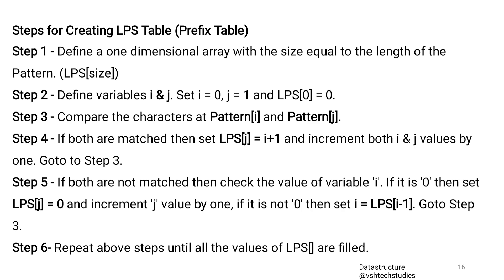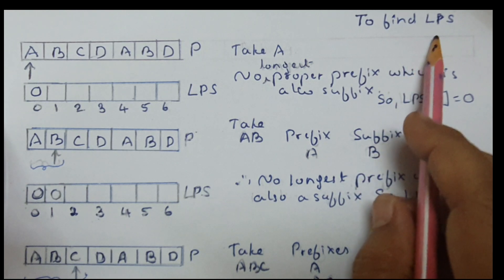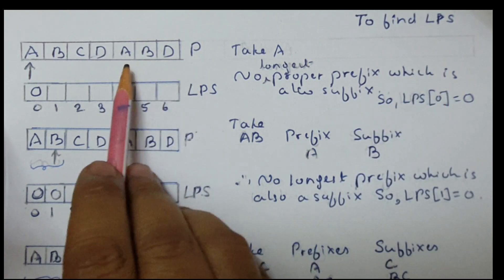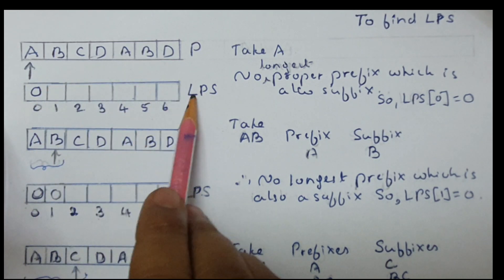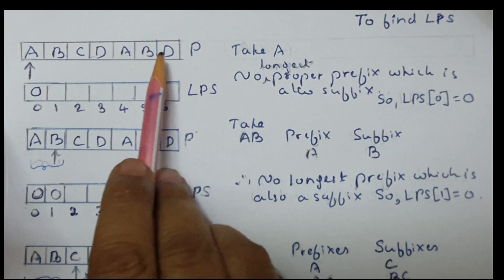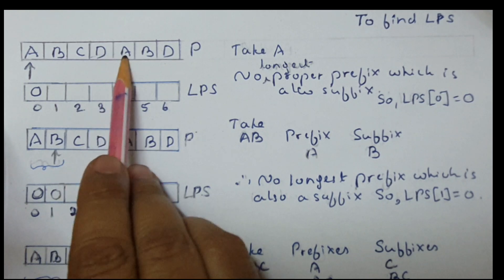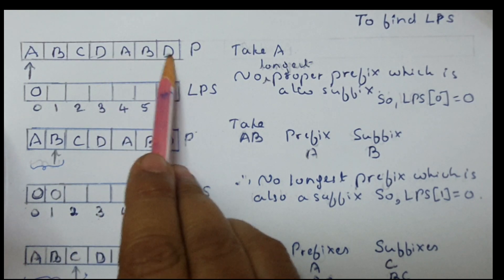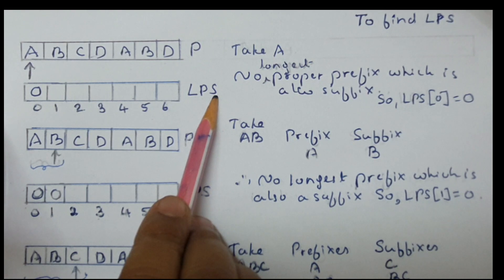These steps can be understood when we solve the problem. Next, we find the LPS lookup table — the Longest Prefix which is also Suffix. For this, we take pattern P = ABCDABD. The LPS lookup table array will also have the same length as P. The length of pattern P is 7, so 7 memory locations in the LPS array have to be reserved.